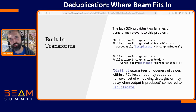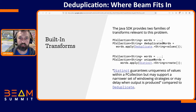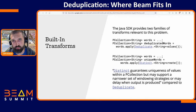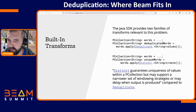If you look through the built-in Beam transforms, you'll eventually come across Deduplicate and Distinct, both relevant to this problem. The documentation says: "Distinct guarantees uniqueness of values within a PCollection, but may support a narrower set of windowing strategies or may delay when output is produced compared to Deduplicate." What does that mean?